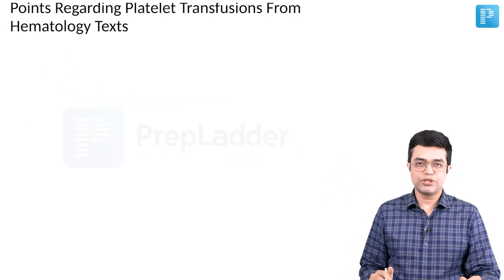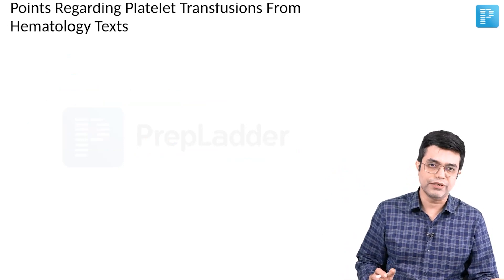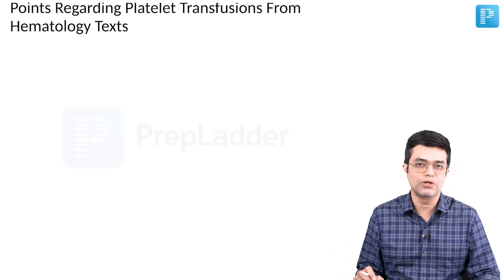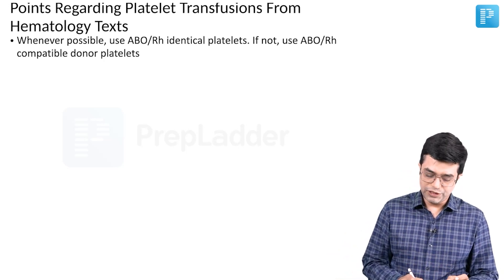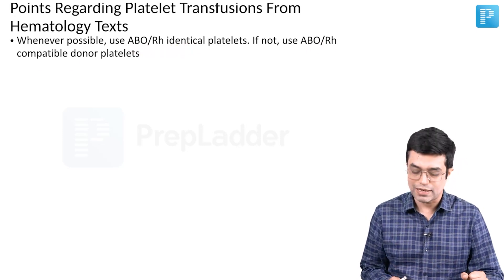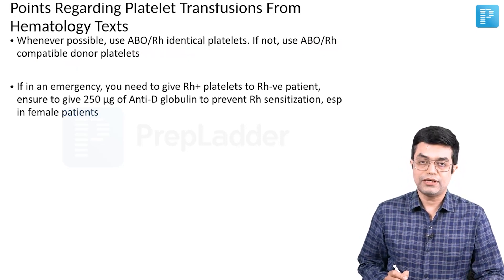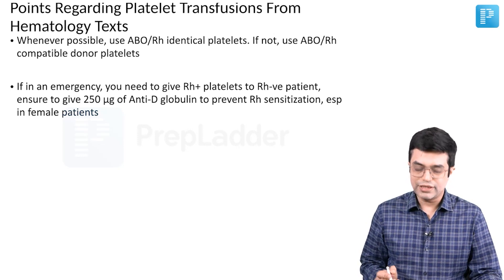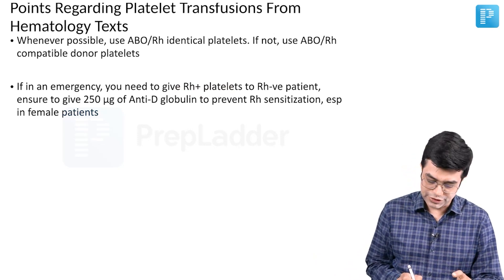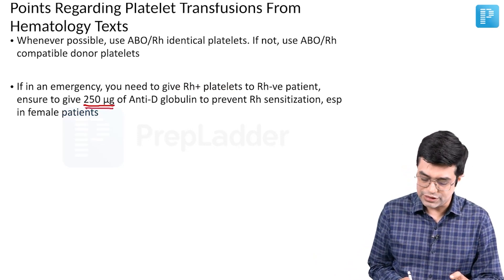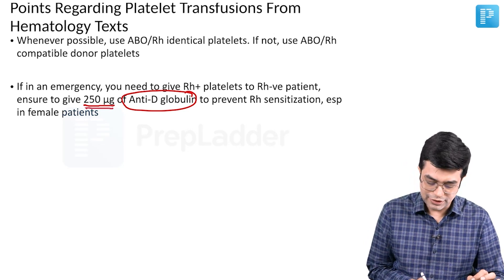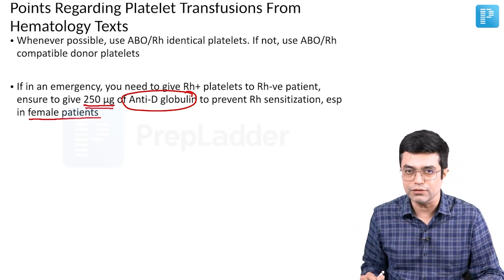Regarding important points for platelet transfusion — relevant for your various interviews in super-specialty and NEET SS as well. Whenever possible, you should use ABO or RH identical platelets. If not available, ABO or RH compatible donor platelets can be used. In an emergency where an RH-negative patient requires platelet transfusion but RH-negative product is not available, and you need to give RH-positive platelets, you must also give 250 microgram injection of anti-D globulin to prevent RH sensitization — this is mandatory, especially if it is a female patient.